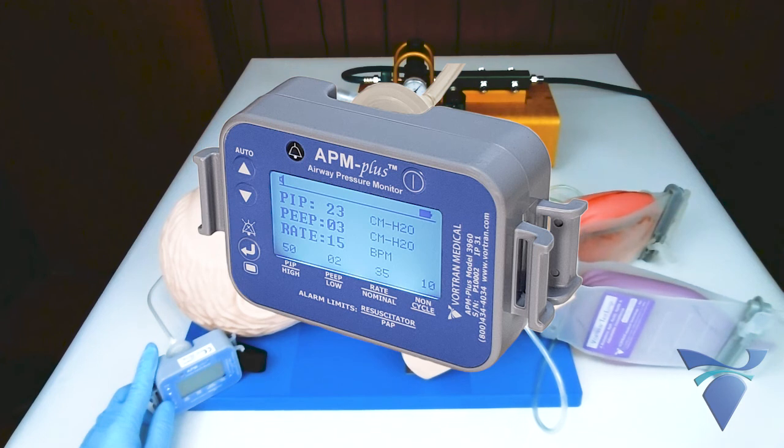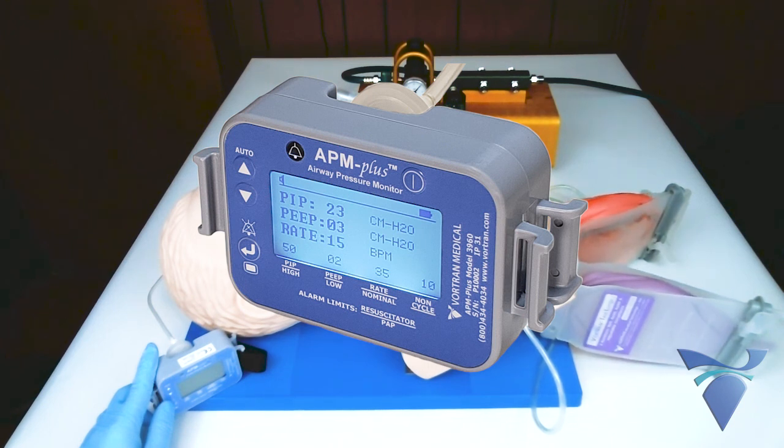Alarms with user-adjustable limits will alert the clinician of high PIP, low PEEP, high breath rate, or a non-cycling condition in case anything in the circuit becomes disconnected.